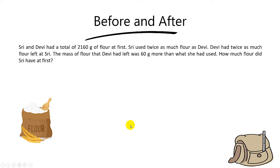In this video, we are going to revise a pretty challenging question involving a before and after. Shree and Debbie had a total of 2160 grams of flour at first.